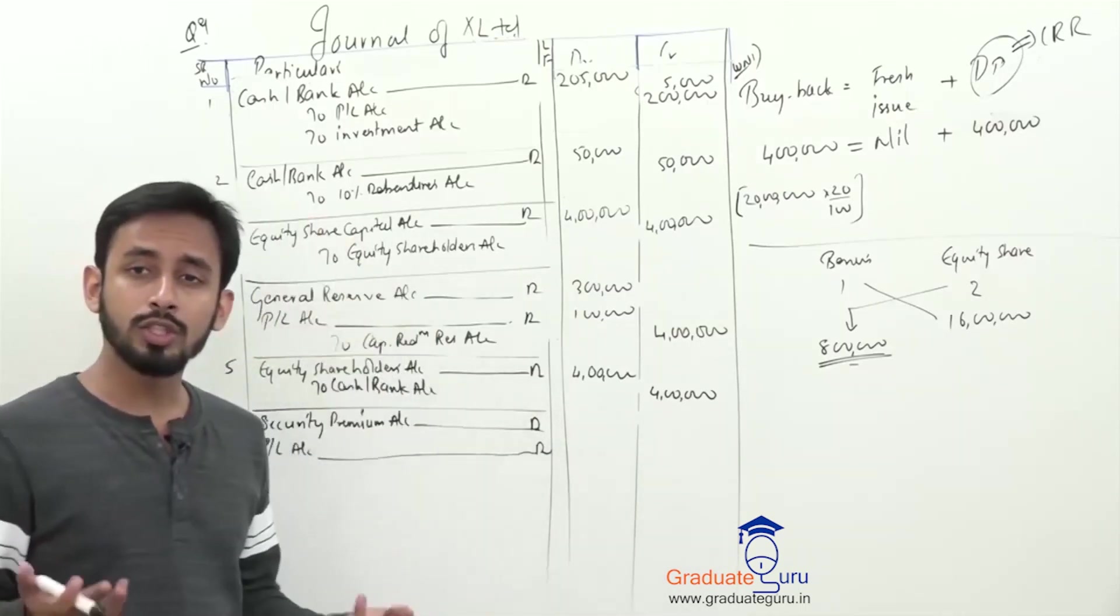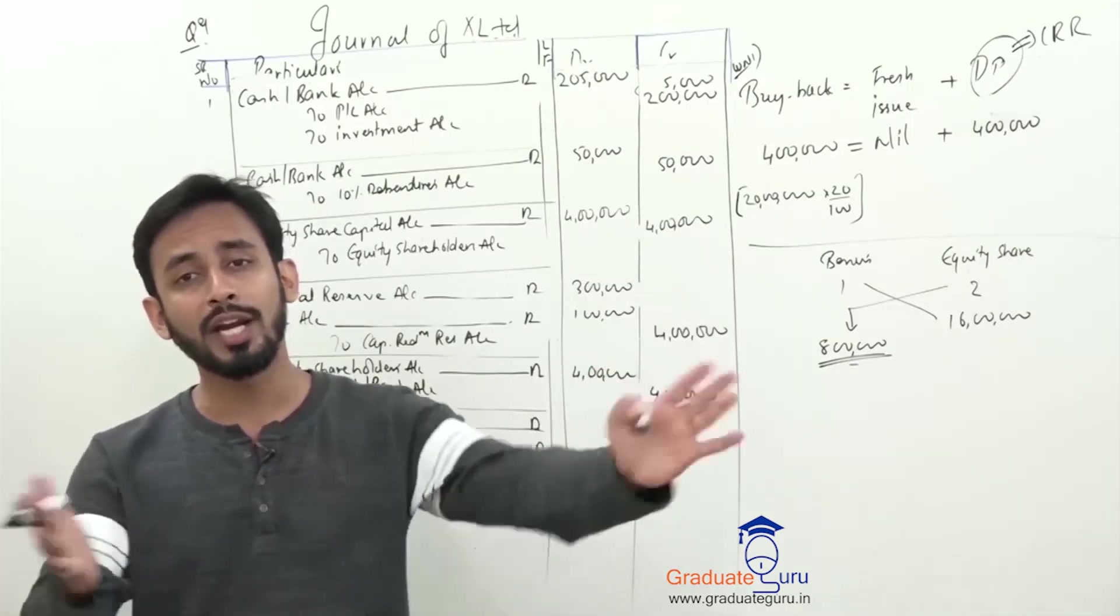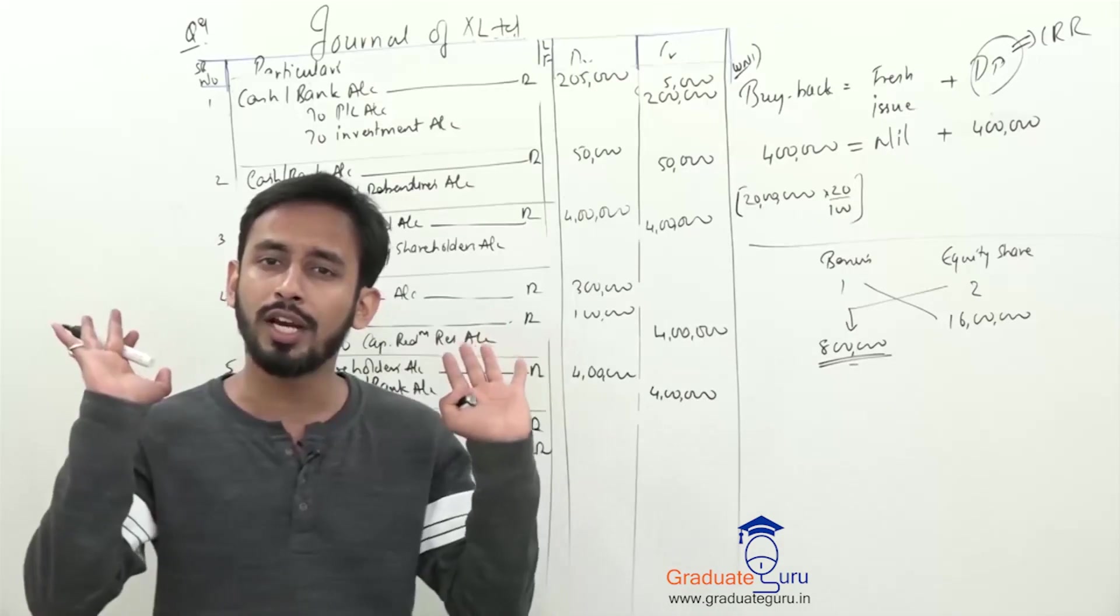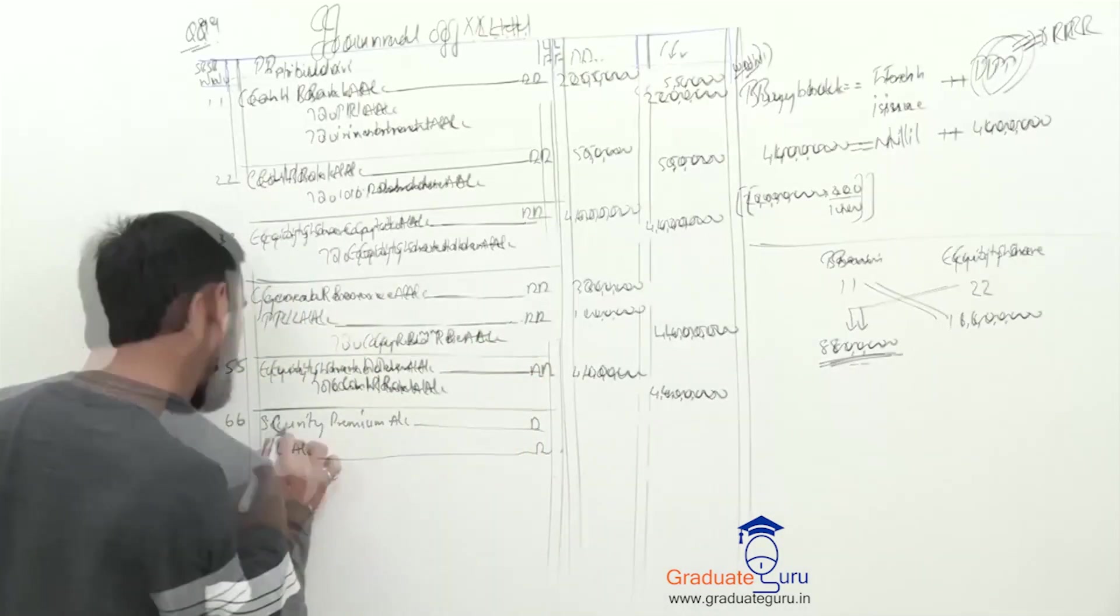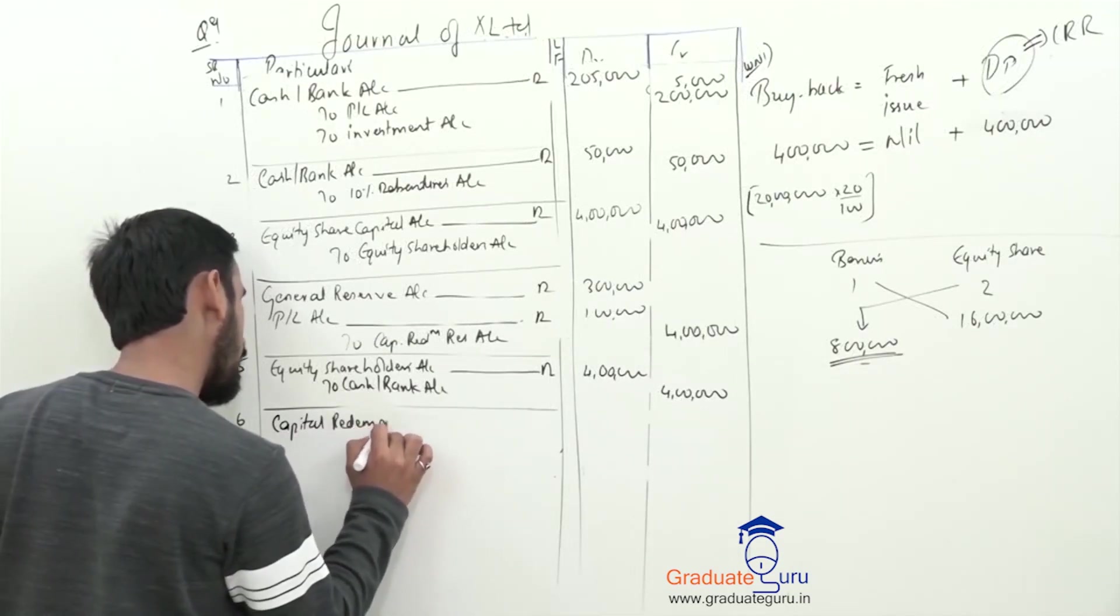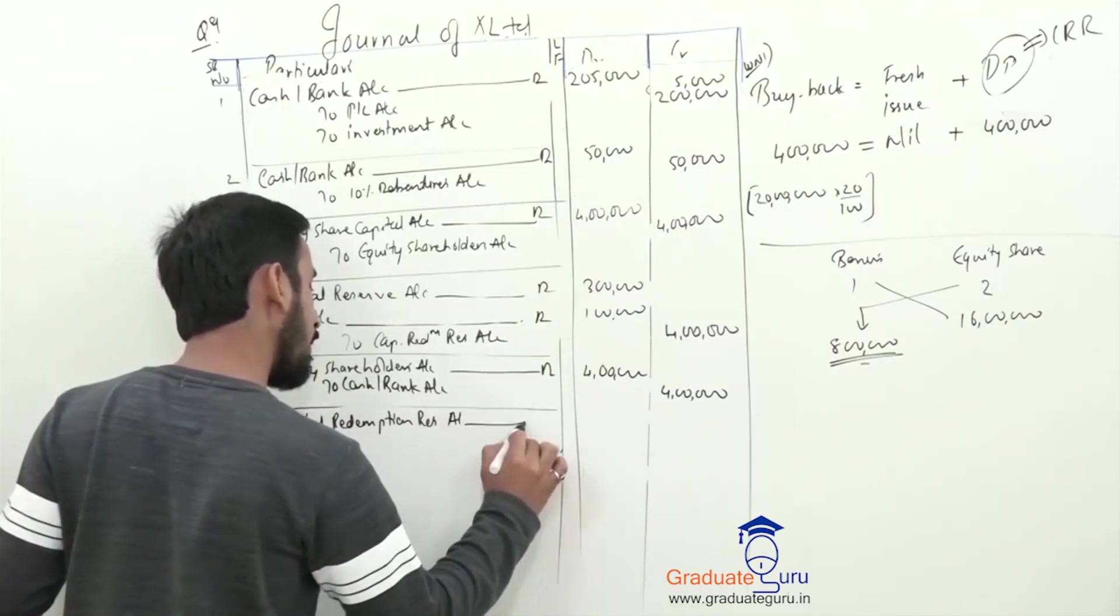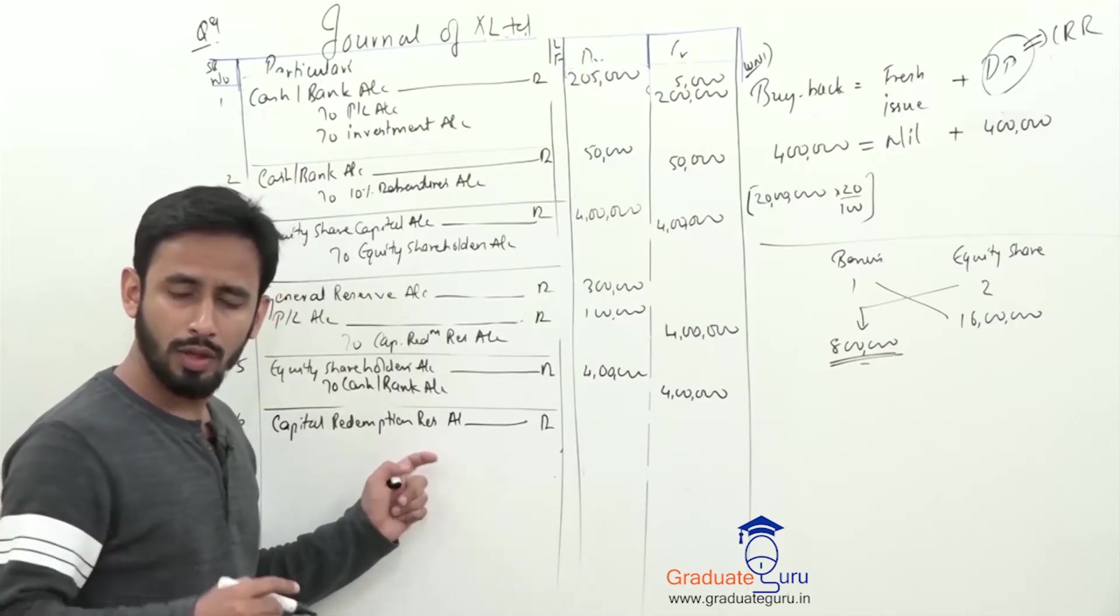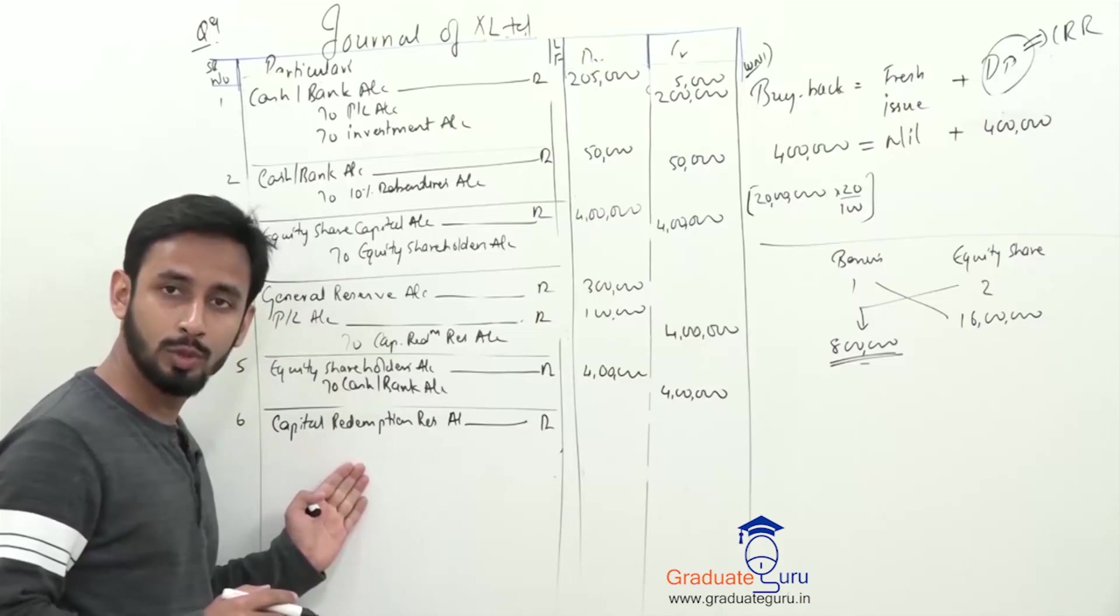Why do we make capital redemption reserve? So, we will write off some capital profits or capital losses. Basically, we will write off capital losses. Then we will write off some issue. So, this is the reason here. So, I will be using capital redemption reserve. Remember, this is the reason? Where is capital redemption reserve. Because you are created. Why are you created?